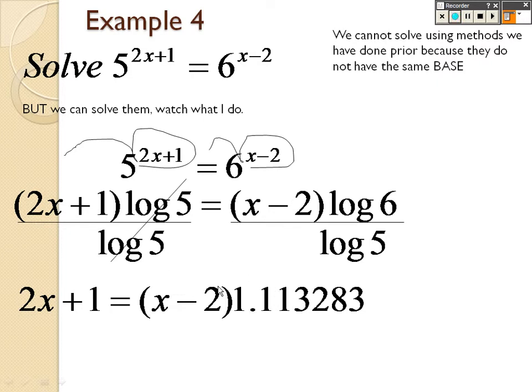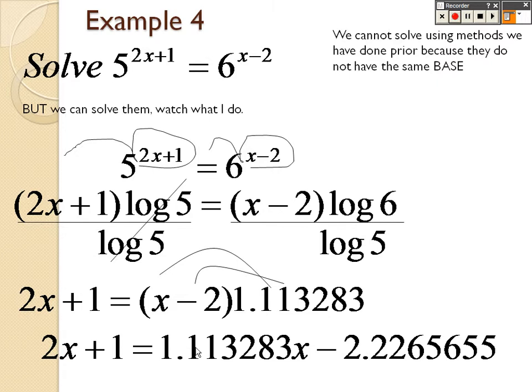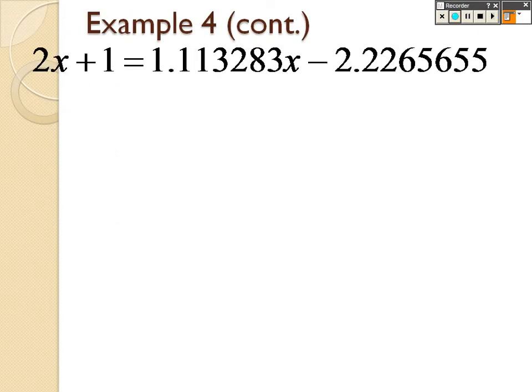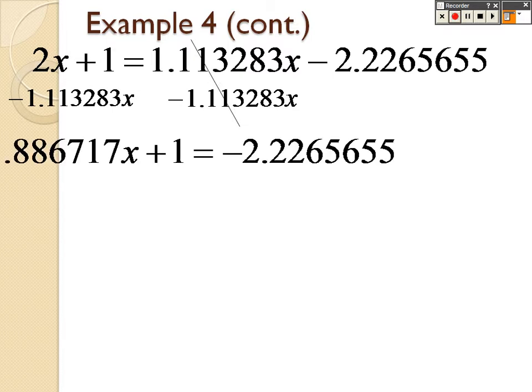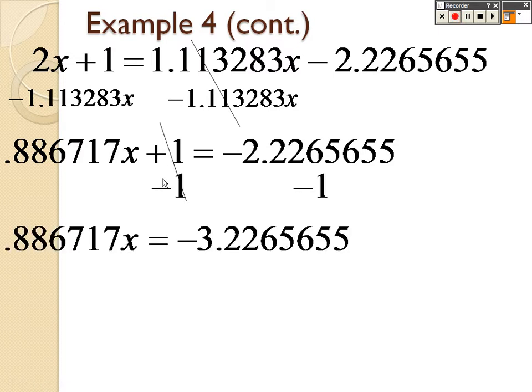Now you can take that through to both terms, and when you do that you get 1.113283x, and negative two times that will give you negative 2.2265655. So just like any other equation, it's just equations with decimals, that's all it is. So minus the crazy decimal x to combine your x's together to get 0.886717x plus 1, and that equals the negative 2.2265655.